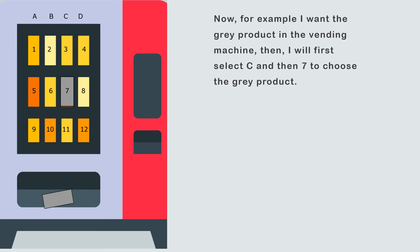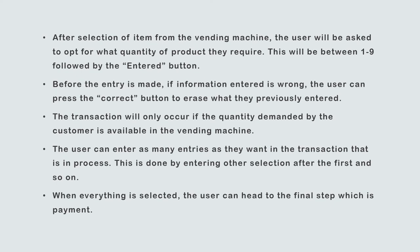For example, if I want a product in position C7, I select C first, then select 7, and choose the gray product. If I want product B2, I choose 2 then select B and take the light yellow product. After selection, the vending machine asks for the quantity. If I want 5 Cokes, I select Coke, enter 5, and press Enter. If the entry is wrong, the user can press the Correct button to fix the mistake.